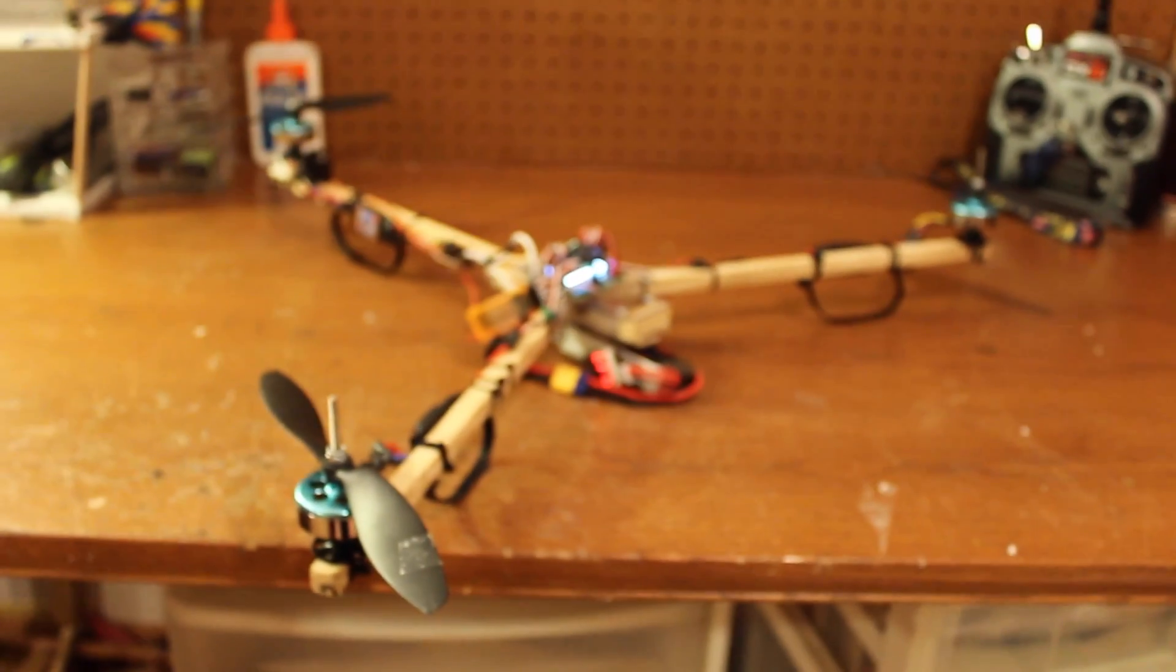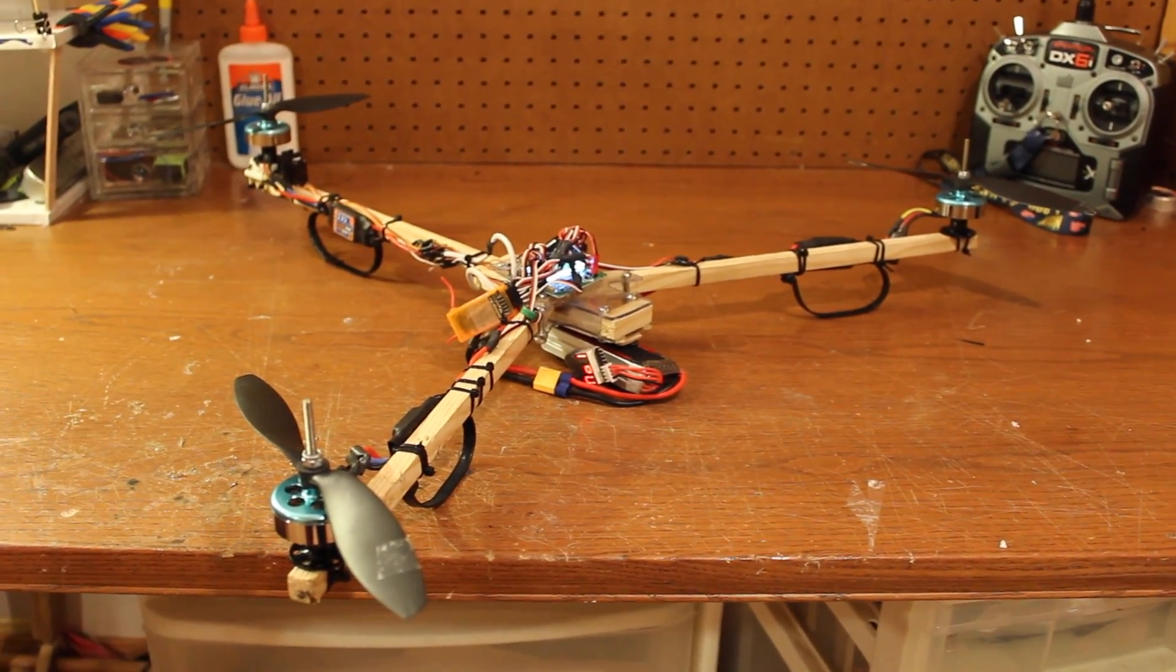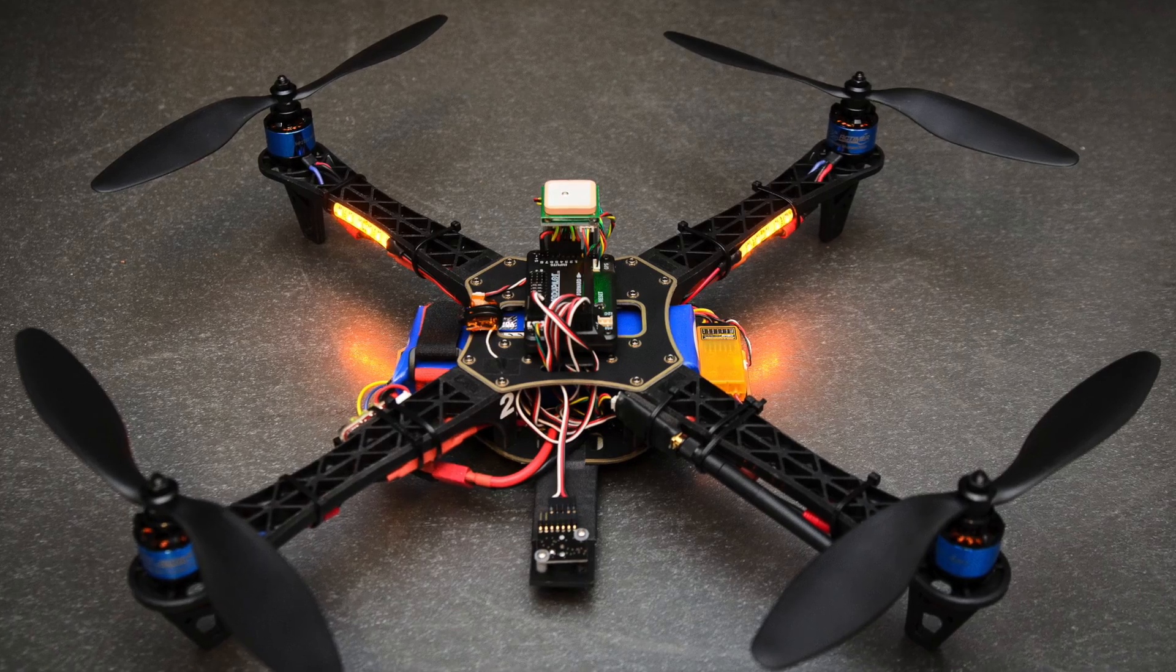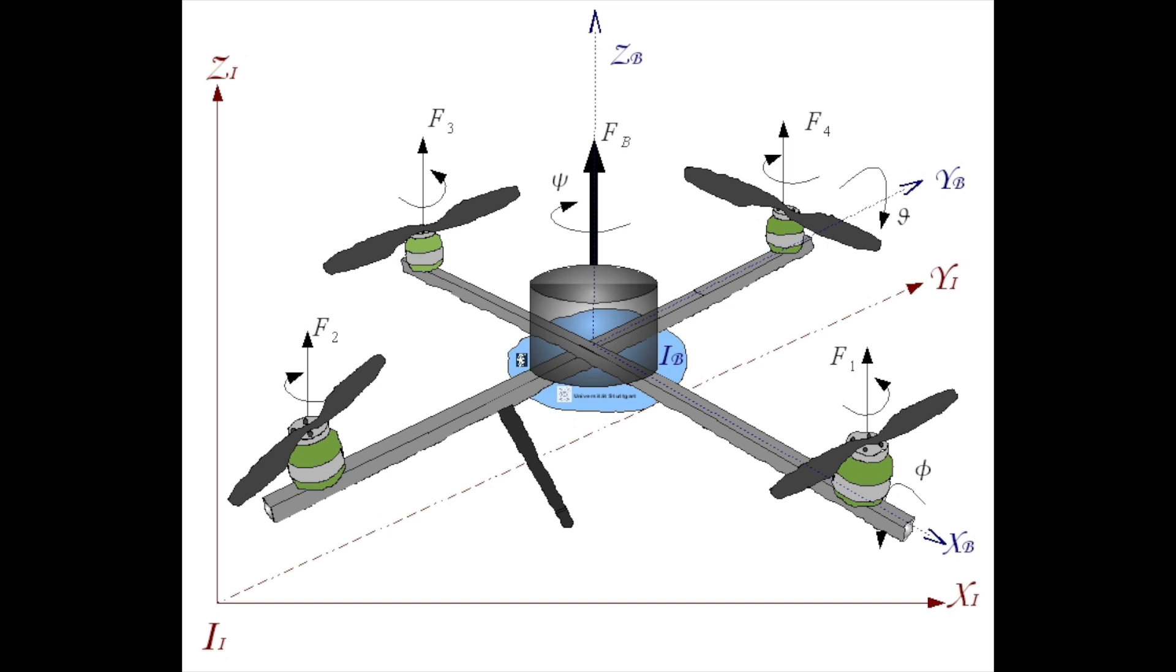So, this is a tricopter that I built. A tricopter over a quadcopter, basically, the only difference is that it has three motors and a servo on the back, whereas a normal quadcopter will have four motors that provide yaw through the torque of the motors, which you can see here.